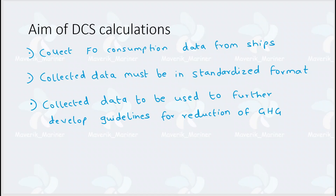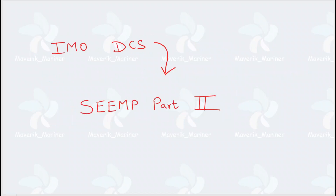IMO is going to use this data to develop new guidelines, new rules, new formulas — to reduce CO2 emissions from ships. This IMO DCS is also known as SEEMP Part 2.